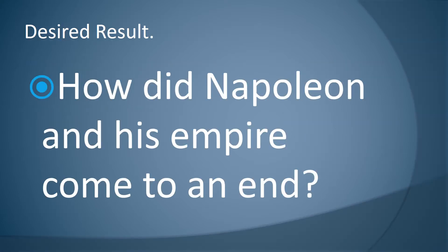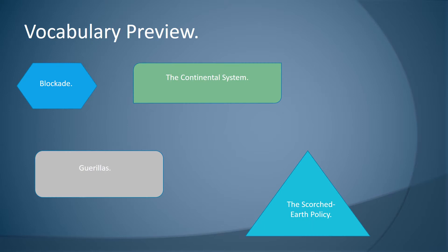The desired result: how did Napoleon and his empire come to an end? Some vocab here — blockade, the continental system, guerrillas, and the scorched earth policy.